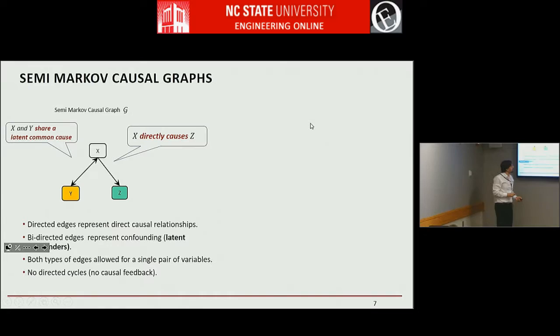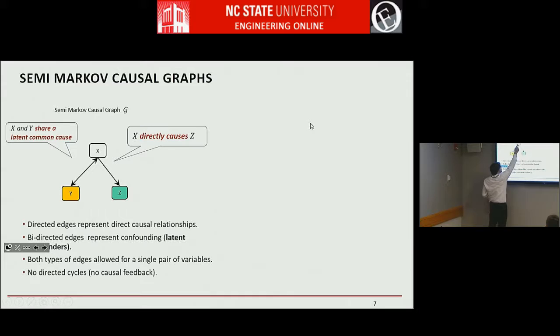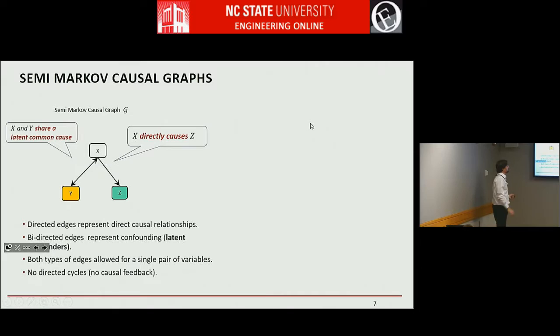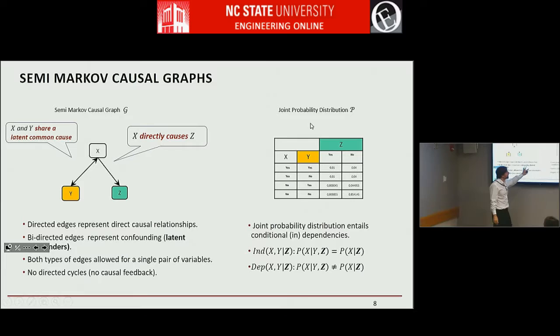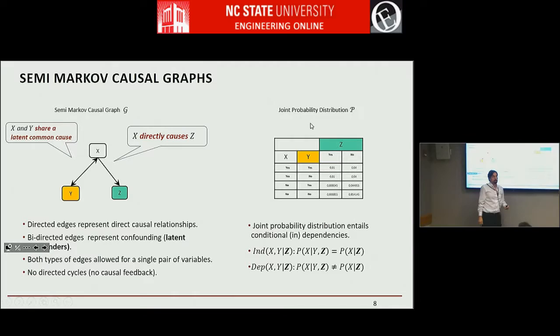These are the types of graphs we are going to be using. You could also have a directed edge combined with a latent variable, denoting that there's a latent variable between these two and X is causing Y. However, we do not allow cycles and feedback. This is the data-generating mechanism, and then you have the joint probability distribution — the numbers.